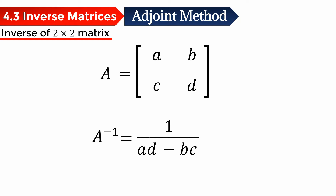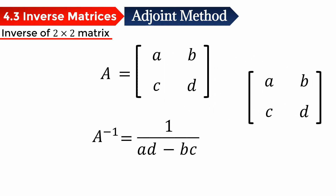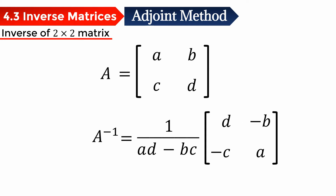And then this value is multiplied with the matrix A, where we switch the elements A and D, and for elements B and C we change the signs. So the formula for the 2x2 matrix adjoint method is 1 over (AD minus BC) multiplied with the matrix with elements D, negative B, negative C, A. This is just when we swap the A and D elements and change the signs for B and C.